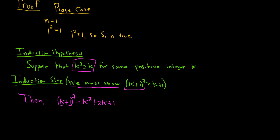We need to get rid of k squared because we're trying to get to k plus 1. So we put a greater than or equal to sign and replace k squared with k — that's from our induction hypothesis, since k squared is greater than or equal to k. The rest just stays: plus 2k plus 1. If none of the extra terms were there, you'd just have k squared greater than or equal to k. Adding 2k plus 1 doesn't affect that inequality — it just hangs out.